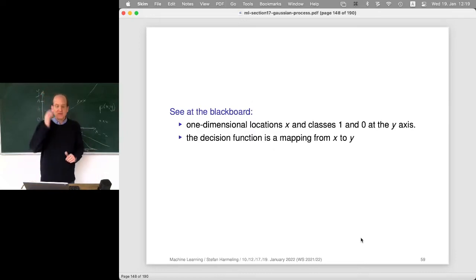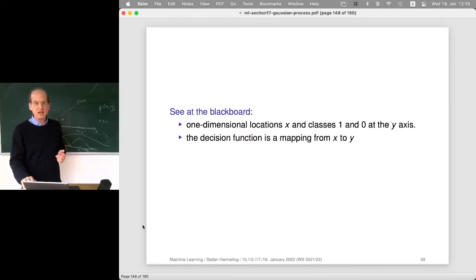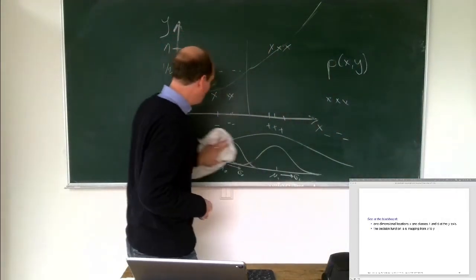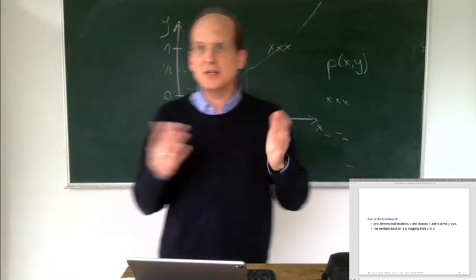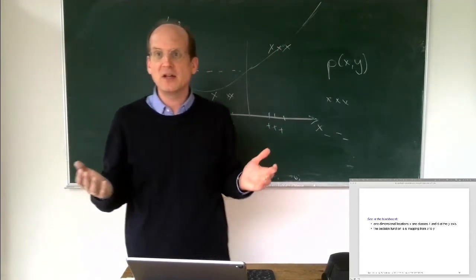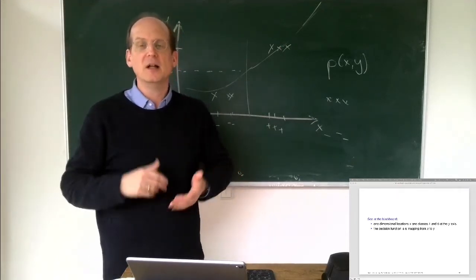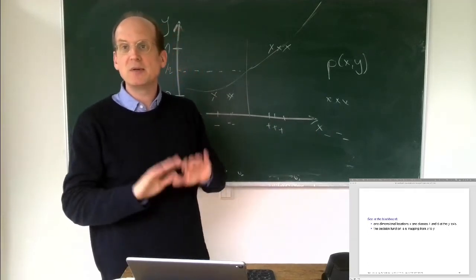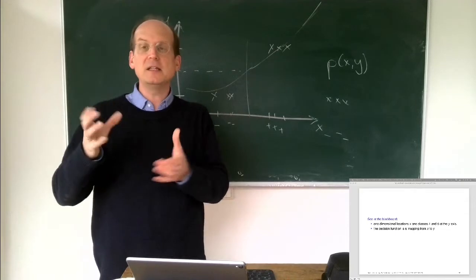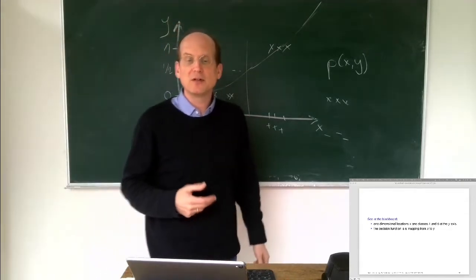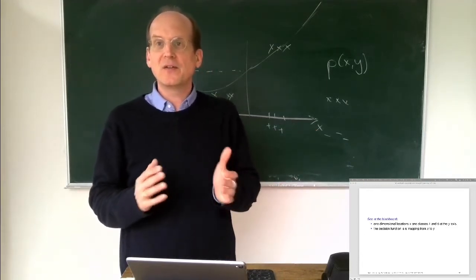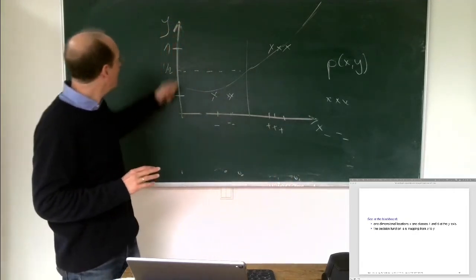For now, let's ignore the causal discussion. We have one-dimensional locations X and classes one and zero, and we want to find a decision function using Gaussian process regression. This is simplified: in practice we might do handwritten digit recognition in a 784-dimensional space, but the kernel functions can calculate similarity in that high-dimensional space. All the GP regression code applies to very high-dimensional locations with no problem — you just calculate the kernel matrices differently.